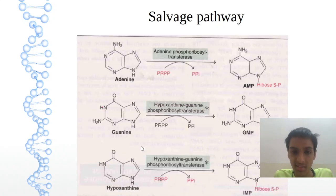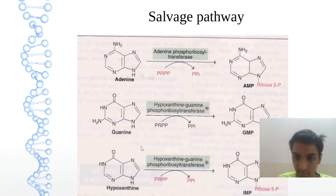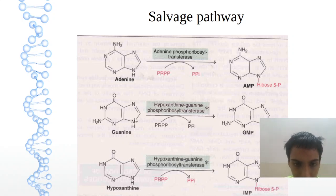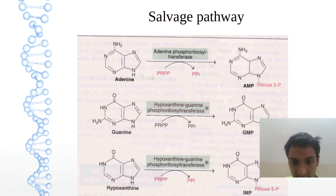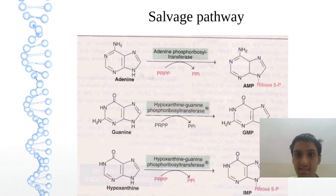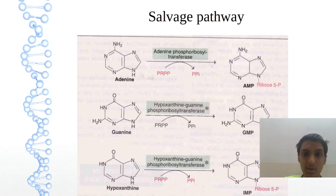Now the salvage pathway. Adenine on phosphoribosyltransferase gives AMP. For guanine and hypoxanthine, the enzyme is the same — that is HGPRT, which I break down as hypoxanthine-guanine phosphoribosyltransferase. HGPRT.